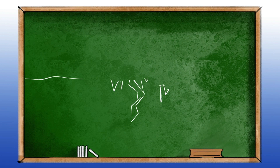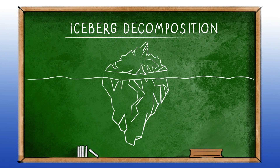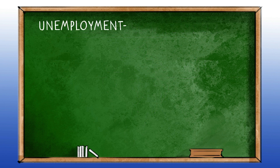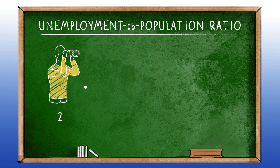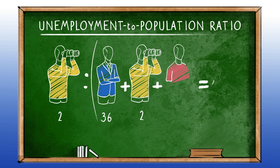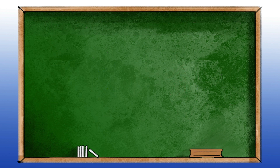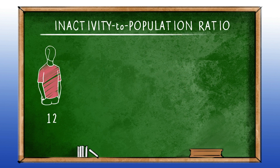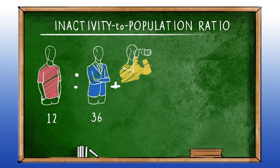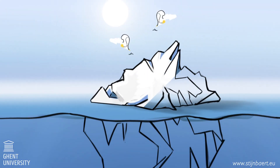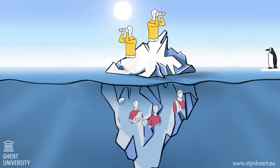The alternative I propose is to use the iceberg decomposition, with which we can compare labor markets on the basis of two simple measures. Firstly, the unemployment-to-population ratio, which indicates how many unemployed there are among the entire population aged between 25 and 64. And secondly, the inactivity-to-population ratio, which indicates how many inactive people there are among this entire population. These figures represent the size of the tip of the iceberg as well as the mass of ice underwater.